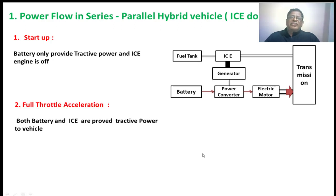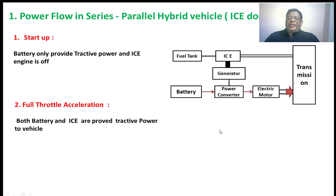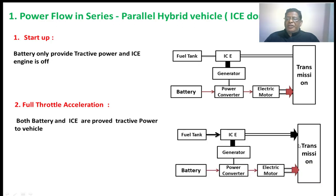Full throttle acceleration — suppose if we are going at high speed on a vehicle, by that time both battery and IC engine will be supplying power to the vehicle. The black arrow is showing the power given by the IC engine directly, and the red arrow is showing the battery giving power to the vehicle.